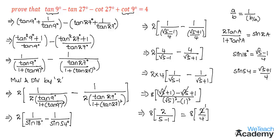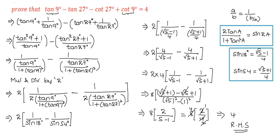So we get 8 times 2 by 4, which simplifies to 4. This is exactly the value on the RHS. Hence we have proved that tan 9 degrees minus tan 27 degrees minus cot 27 degrees plus cot 9 degrees equals 4. Make a note of these key formulas: 2 tan A divided by 1 plus tan squared A equals sin 2A; sin 18 degrees equals root 5 minus 1 by 4; and sin 54 degrees equals root 5 plus 1 by 4.